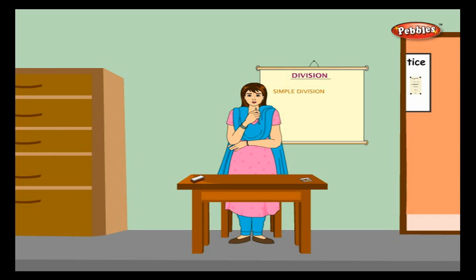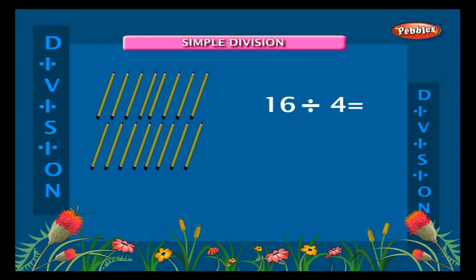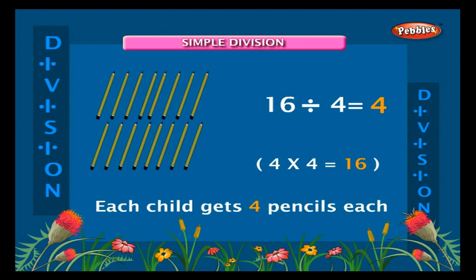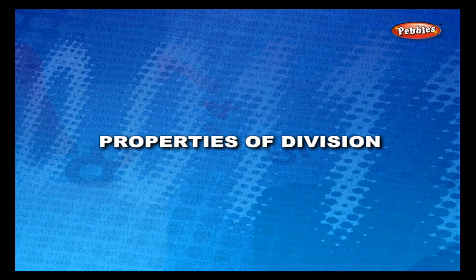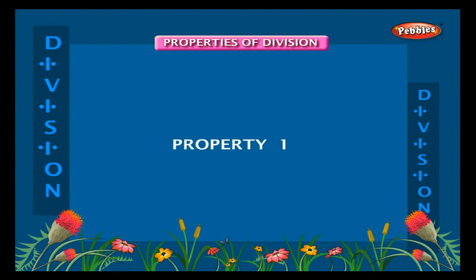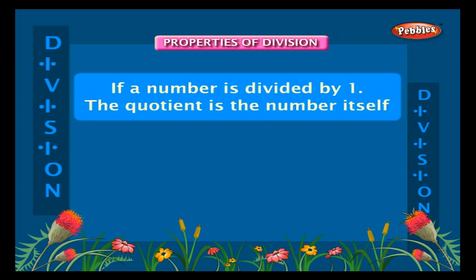What would you do when you have to share sixteen pencils among four children? Divide sixteen by four. Four goes four times in sixteen. That is, sixteen divided by four is equal to four. Each child gets four pencils each.